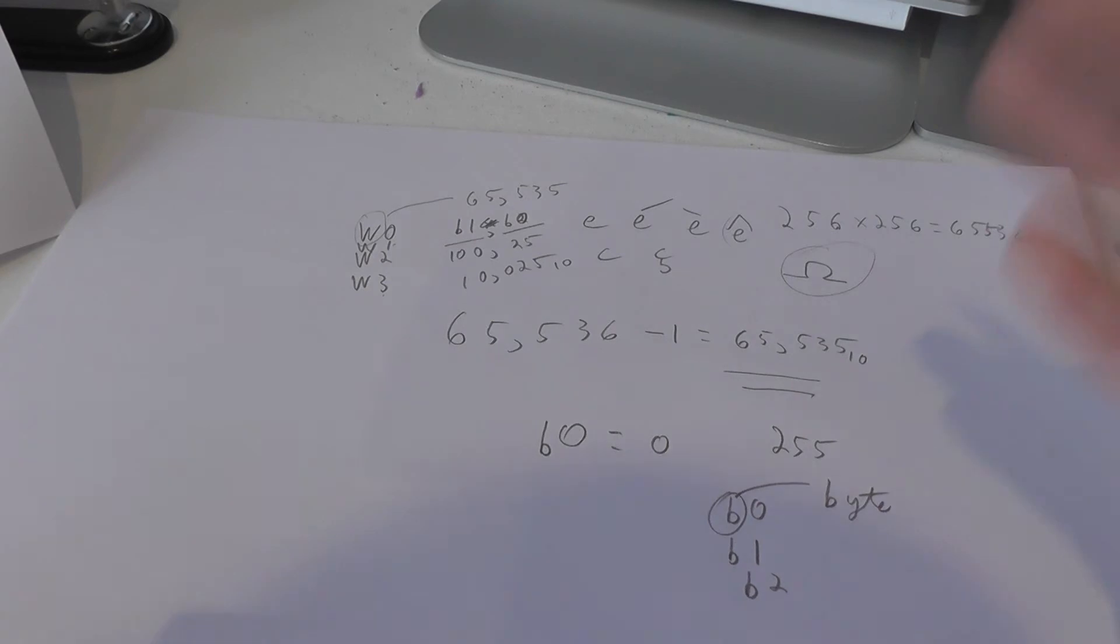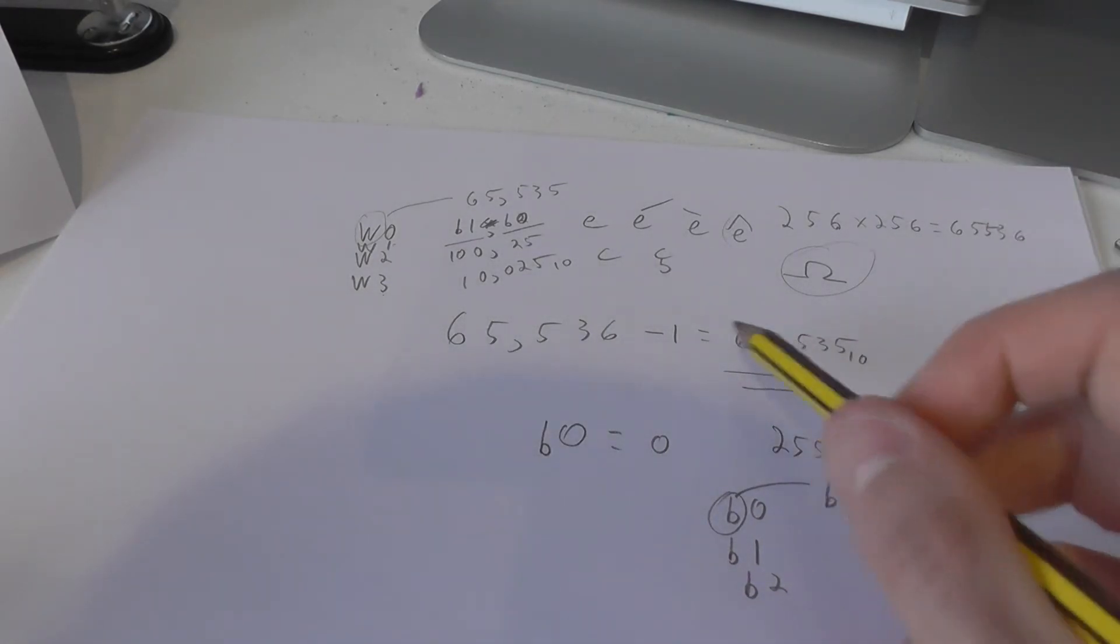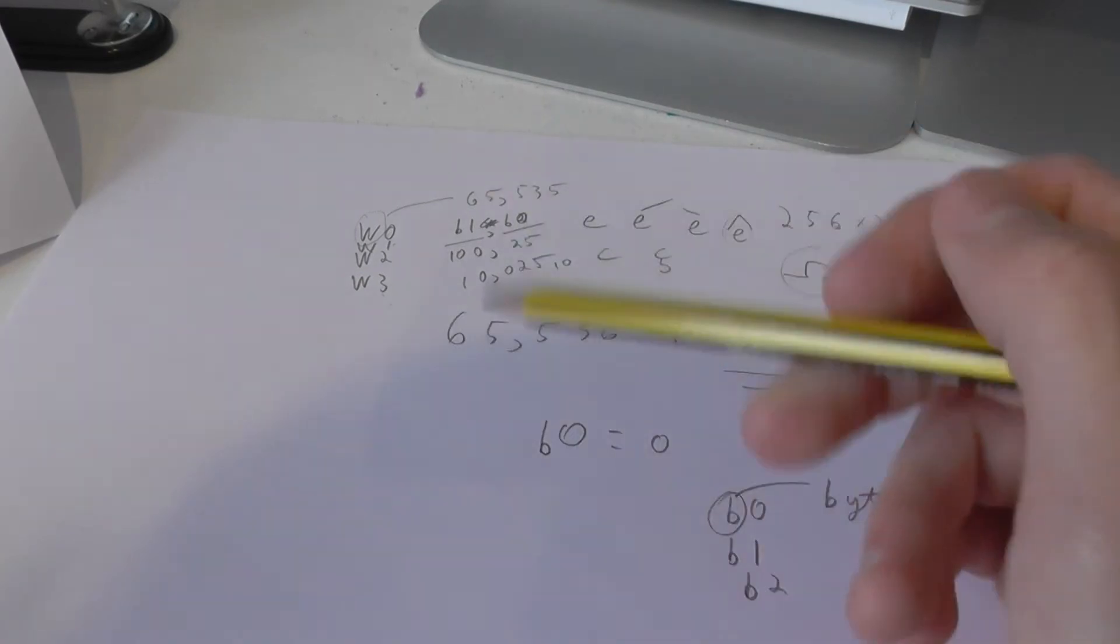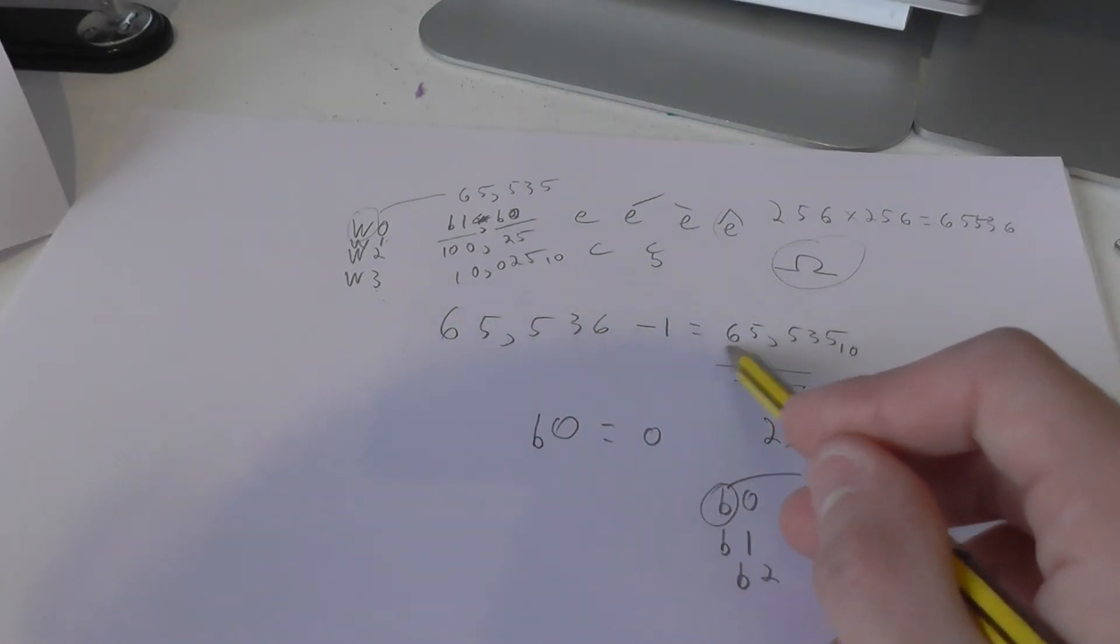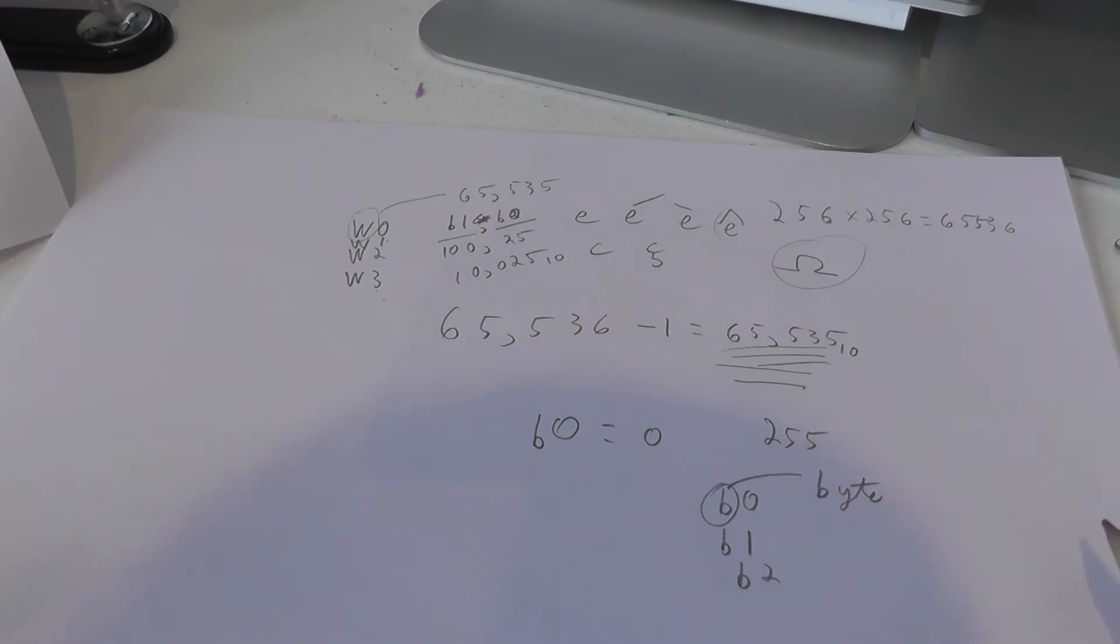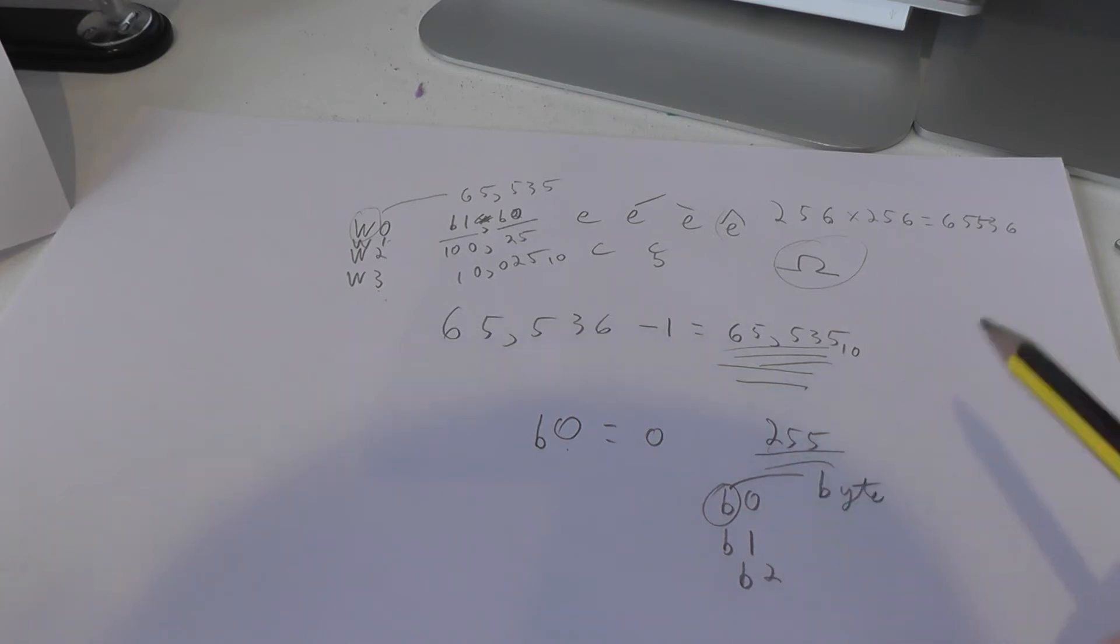That is a complicated thing to try and get your head around, I will admit. It's very complex. But if I ever say we're going to use a word variable or a w variable, we're using a variable that can store 65,535 numbers in it. If we're using a b variable or byte variable, we're using a variable that can store 255 numbers in it.